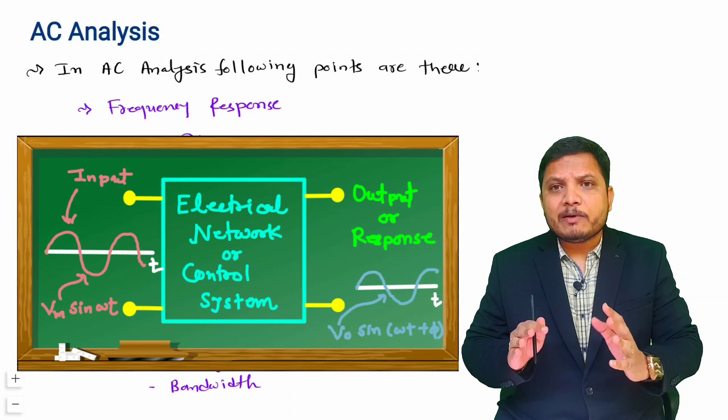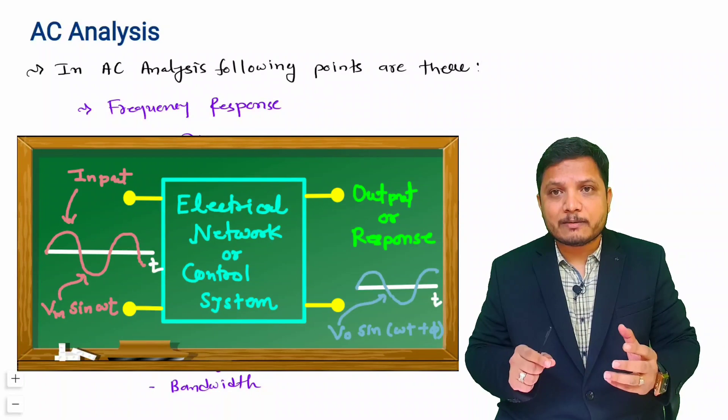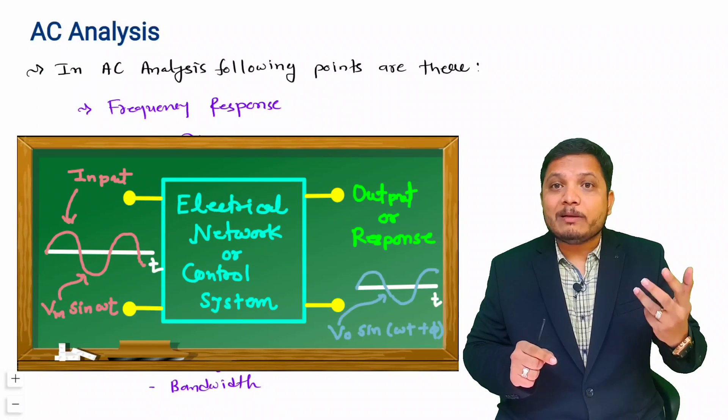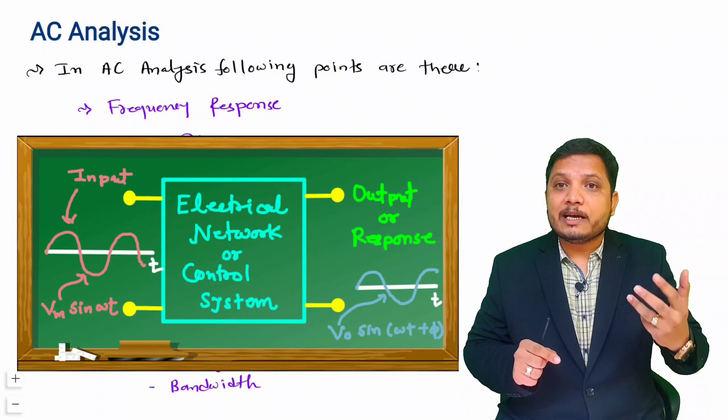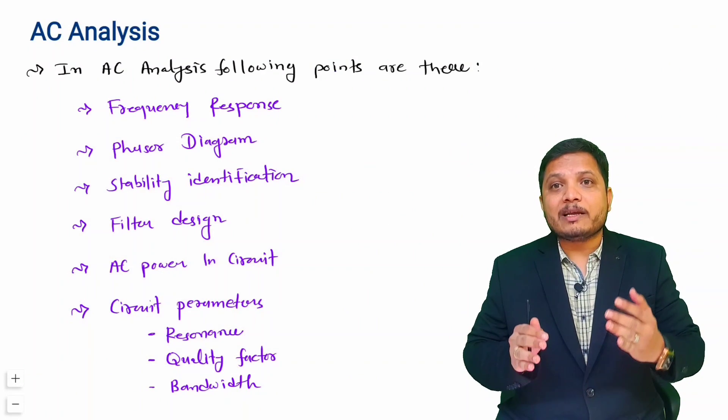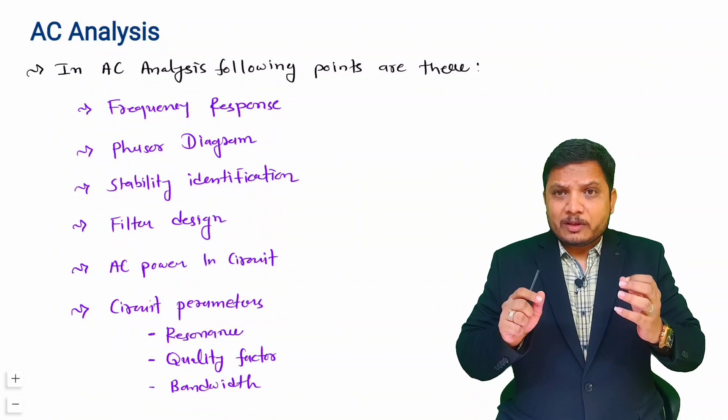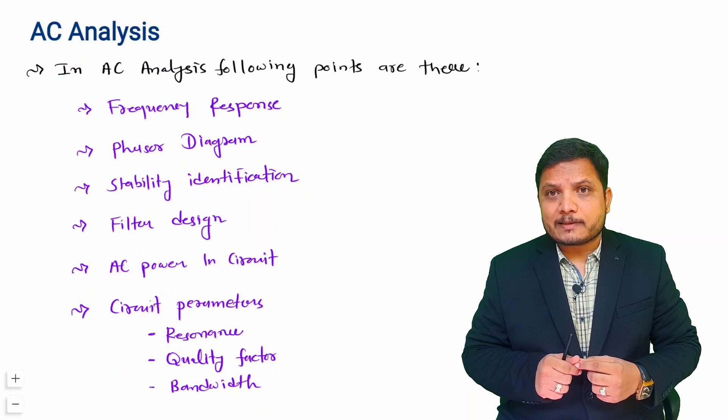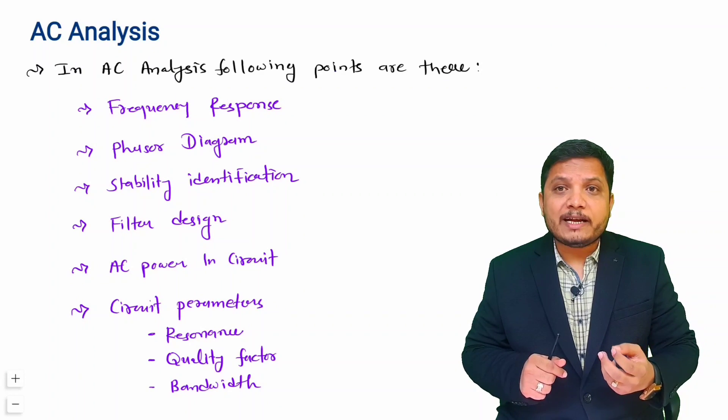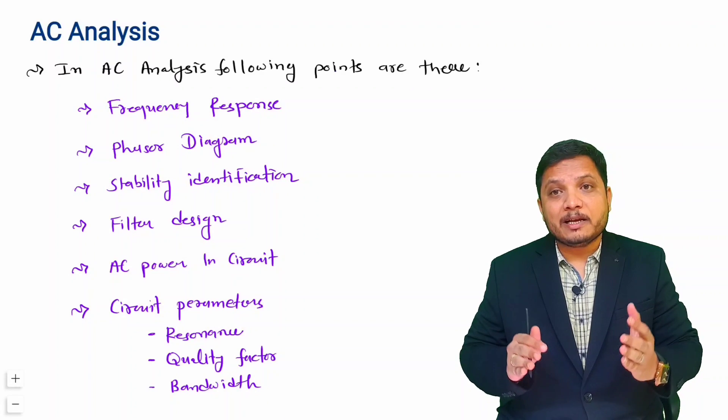In simple way, you can say for a given circuit or system, if input is AC, what will be my output, how many parameters are getting changed in my output, whether the given circuit is stable or whether the given system is stable or not, all those things we study in AC analysis. So stability identification, transfer function identification, all those things we study in AC analysis.